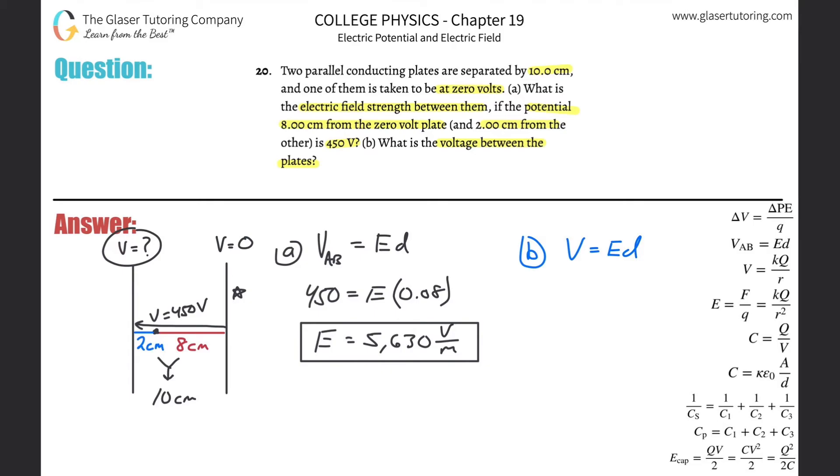Right? So in other words, this voltage at this point is 80% of the overall value. How did I get 80%? Remember, it's 8 centimeters, that length, divided by the whole length. Okay? So if I told you that 450 is 80% of the full value of the full voltage, how would you find the full voltage?